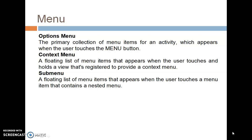There are various menus available in Android. Option Menu is a primary collection of menu items for an activity, which appears when the user touches the menu button. Context Menu is a floating list of menu items that appears when the user touches and holds a view registered to provide a Context Menu. Sub Menu is a floating list of menu items that appears when the user touches a menu item that contains a nested menu.